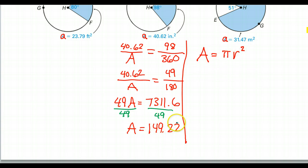So area is equal to pi times the radius squared. Since now I have the area, I can just take that and put it in. So this is going to be 149.22 is equal to pi r squared. So now it's just like previous problems that we've done.